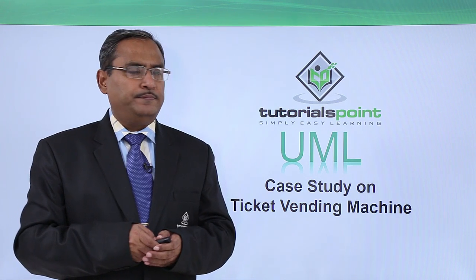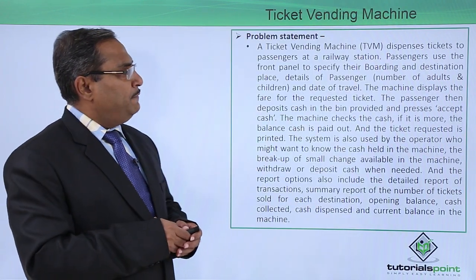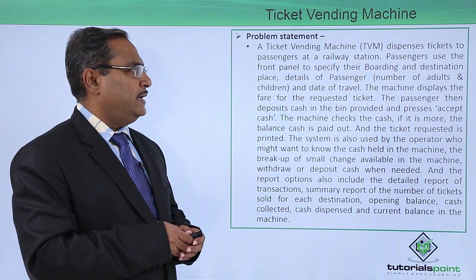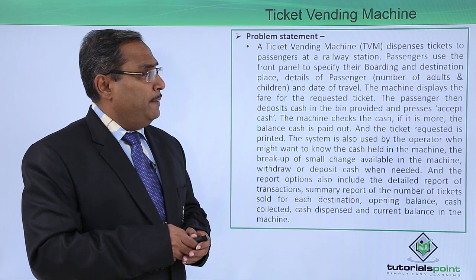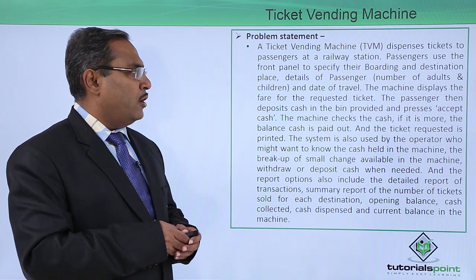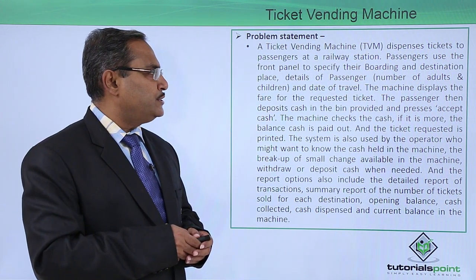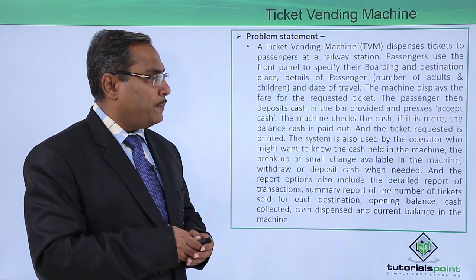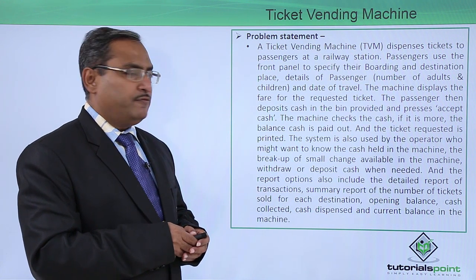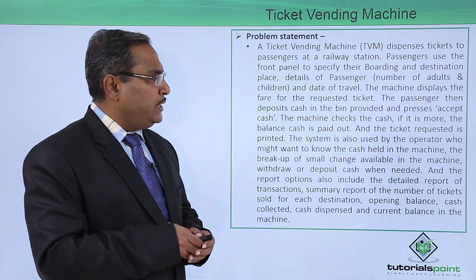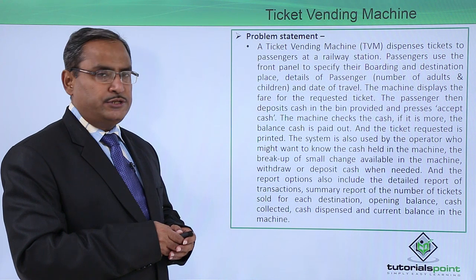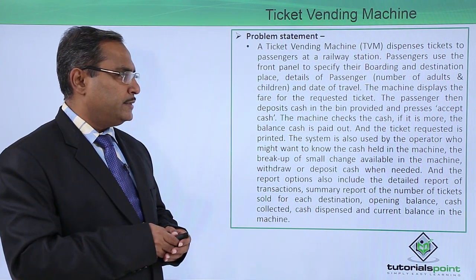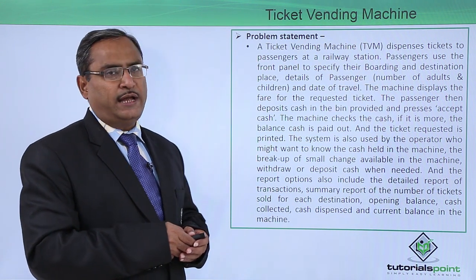Here is the problem statement. A Ticket Vending Machine dispenses tickets to passengers at a railway station. Passengers use the front panel to specify their boarding and destination place, details of the passenger such as the number of adults and children, and the date of travel. The machine displays the fare for the requested ticket.